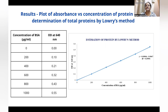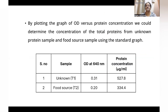After obtaining the optical density at 640 nanometers, it is necessary to make a standard graph with optical density at 640 nanometers on the y-axis and concentration of BSA in microgram per ml on the x-axis. By plotting the graph of OD versus protein concentration, it is possible to determine the total protein from the unknown as well as the food source sample. In our case, the concentration of the unknown protein was found to be 527.8 microgram per ml, and for the food source protein sample, we found 334.4 microgram per ml from the standard graph.